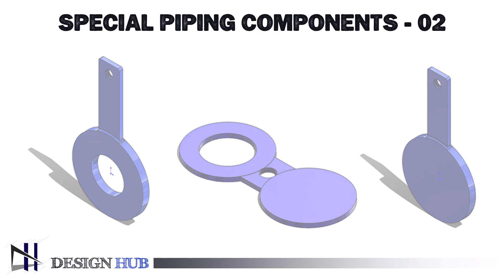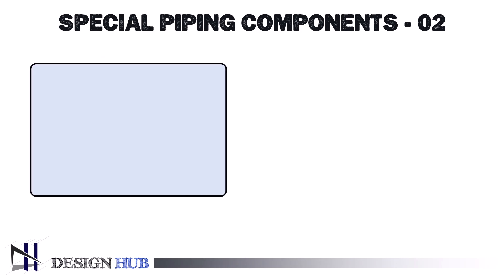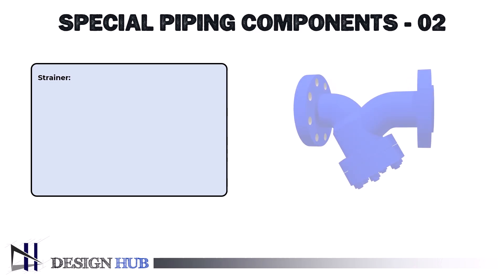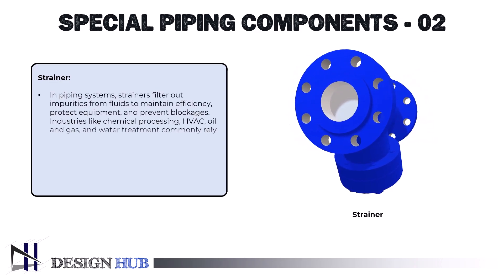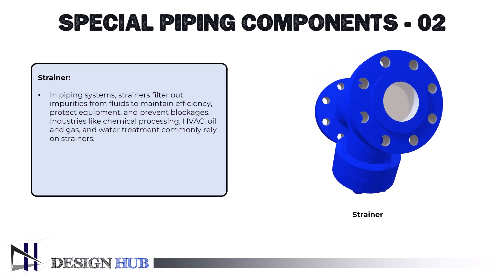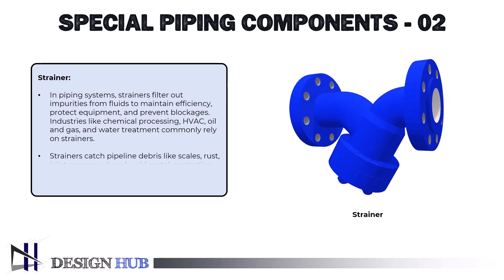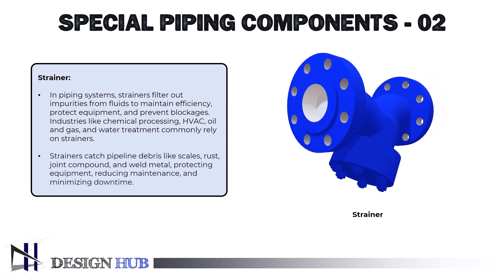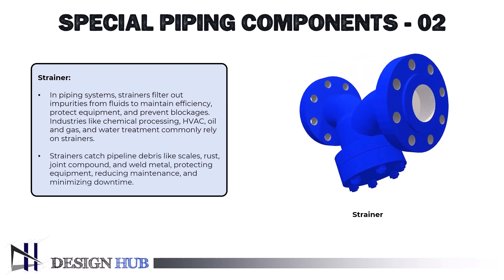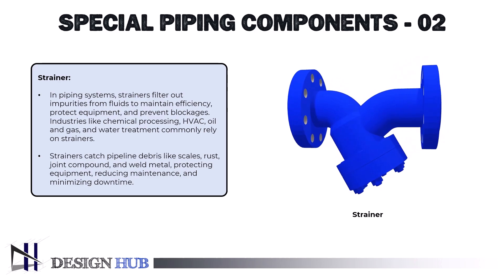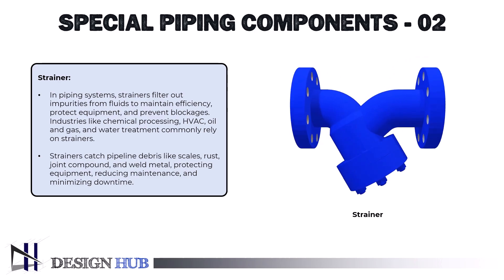In piping systems, strainers are employed as filters to remove impurities, trash, and undesired particles from fluids so that only pure liquid or gas passes through. Strainers catch pipeline debris including scales, rust, dovetail joint compound, and weld metal, protecting equipment and processes from harm and reducing maintenance and downtime.